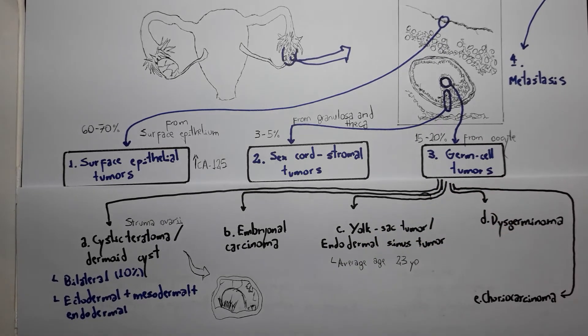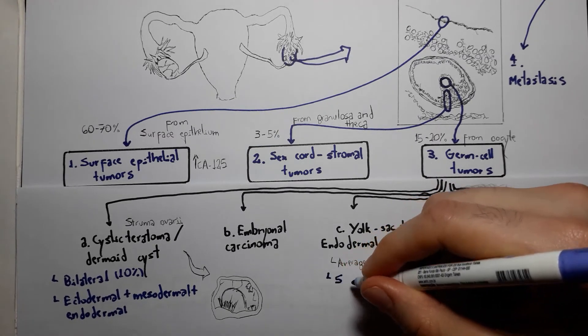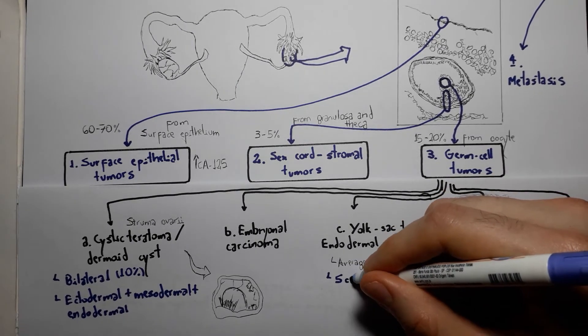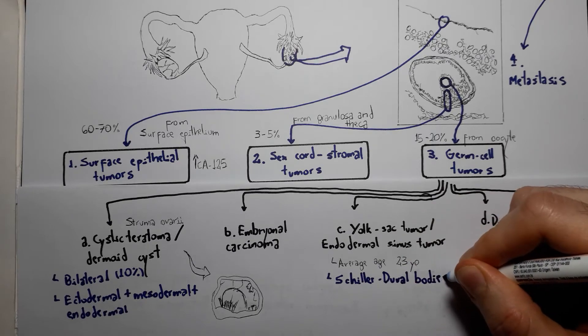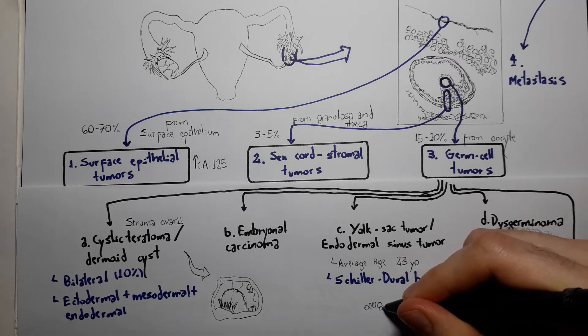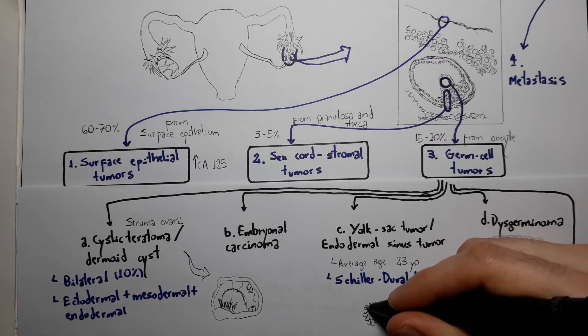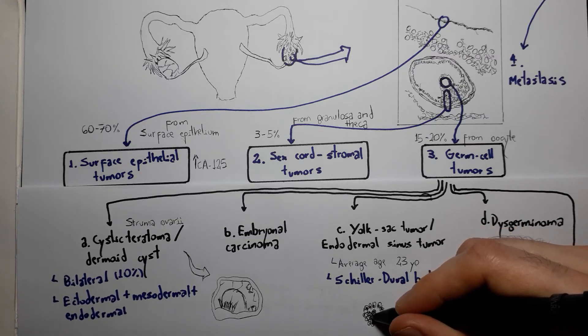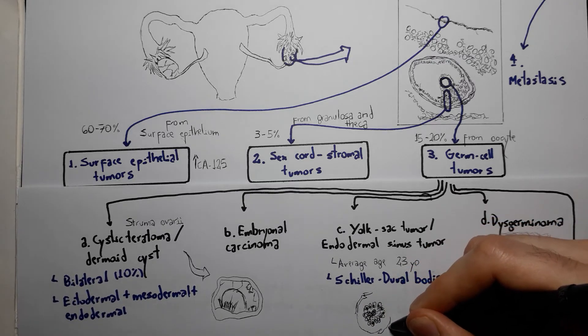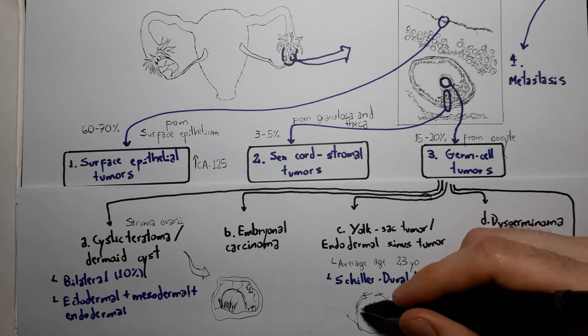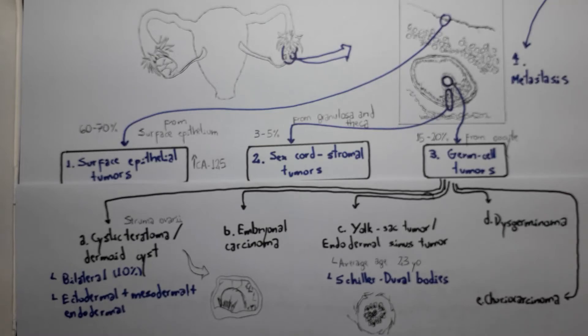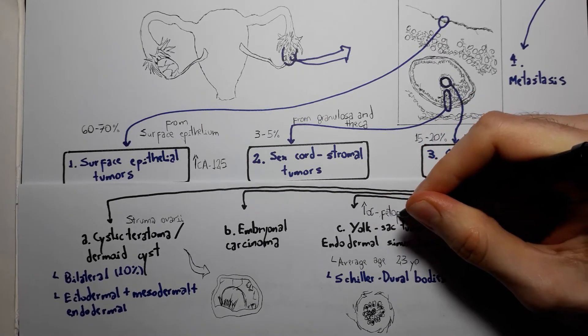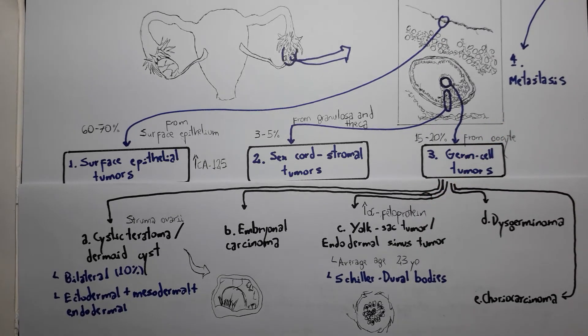Contrary to most ovarian tumors that occur in older women, its main average age is 23 years old. It's known for its Schiller-Duval bodies, which are glomeruloid-like structures. The yolk sac tumor microscopically resembles glomeruli. Since it elevates alpha-fetoprotein, you could remember: a yolk sac full of glomerulus to gift the fetus - a yolk sac tumor with elevated alpha-fetoprotein and glomeruloid formations or Schiller-Duval bodies.